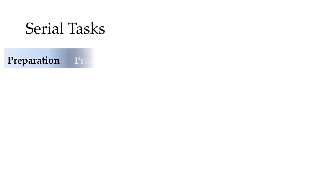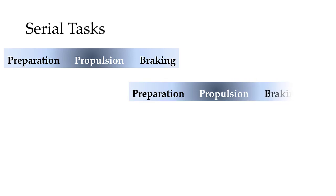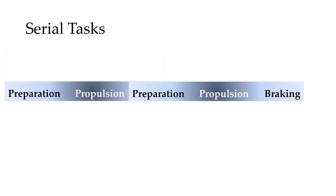With a serial task, we are going to chain together two or more discrete tasks, or a cyclic task and a discrete task. If we chain together two discrete tasks — each having a preparatory phase, propulsion phase, and braking phase — we'll see that the braking phase of the first task is actually the preparatory phase for the second task. When they are seamlessly put together, the braking and preparatory phases morph together. Returning to the triple jump example, the landing of the first jump is the braking phase of that jump, but also the preparatory phase for the second one, and so on.